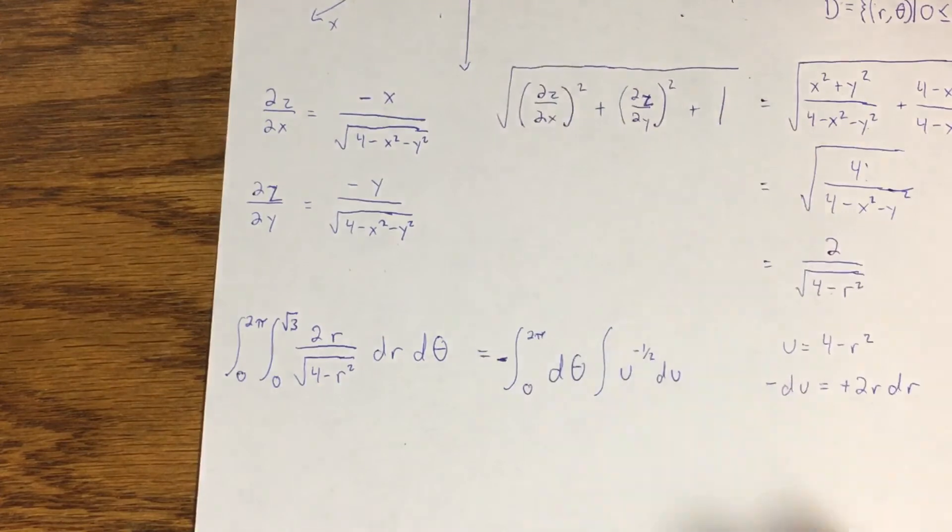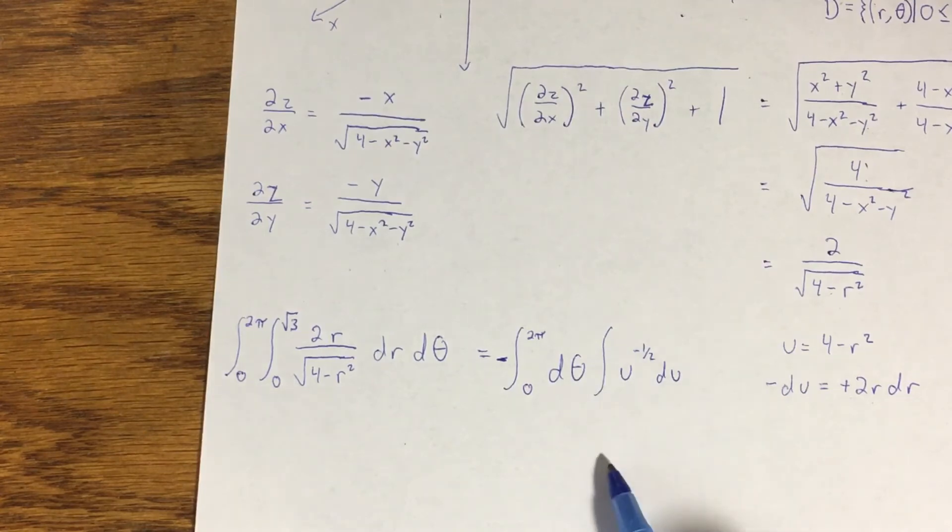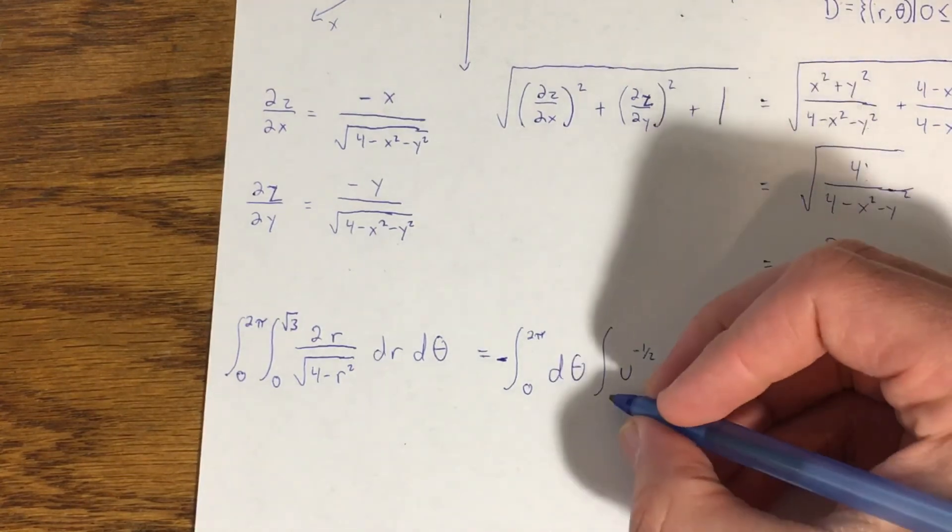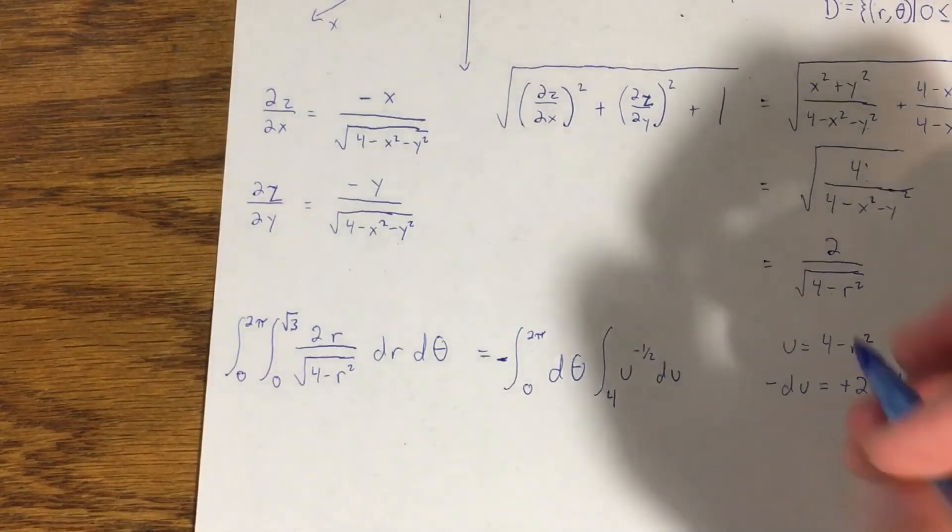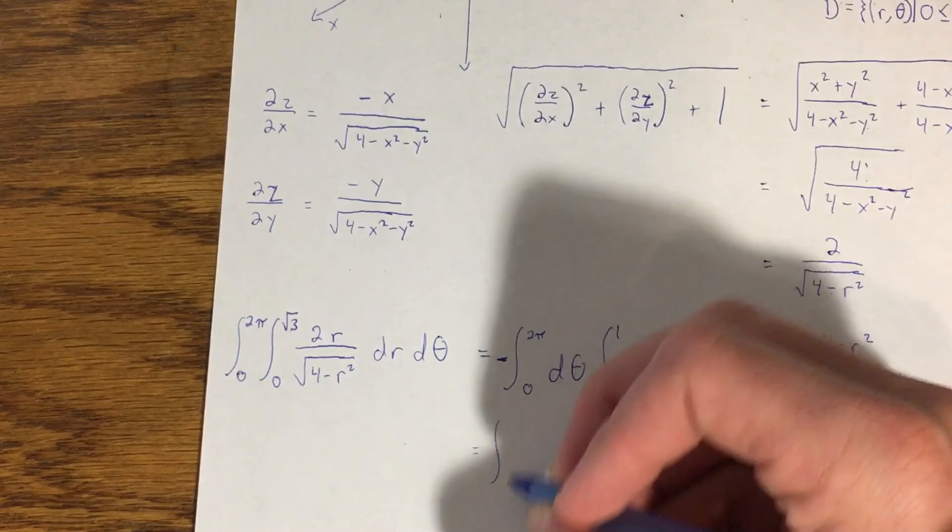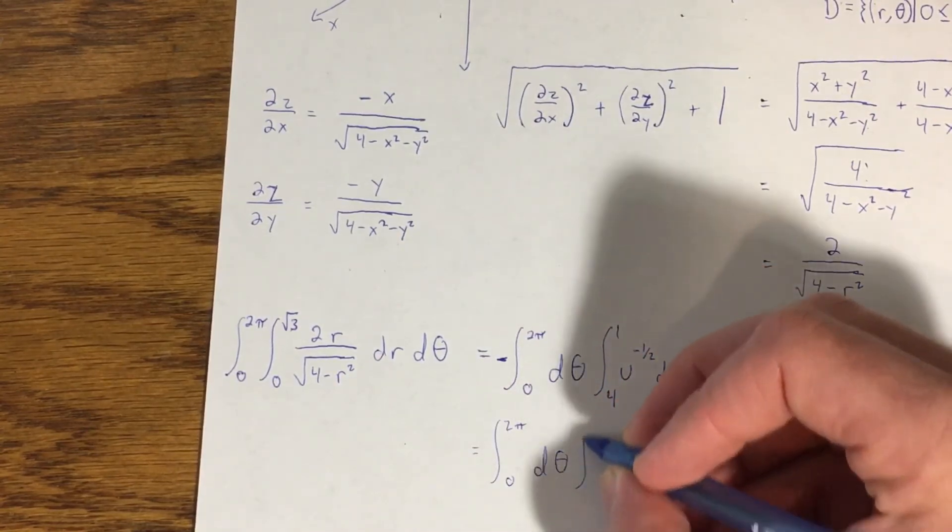The negative I'm getting here I'm going to put out, but it's going to disappear in a second. Next thing I need to do is change my limits of integration. If I plug zero in for r, u becomes 4 minus 0, which is 4. If I plug √3 in for r, then I have 4 minus 3, which is 1. My lower limit of integration is actually larger than my upper limit, so what I'm going to do is use the minus to switch the order of integration.